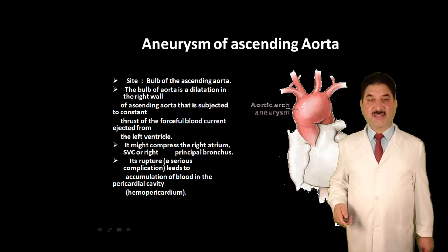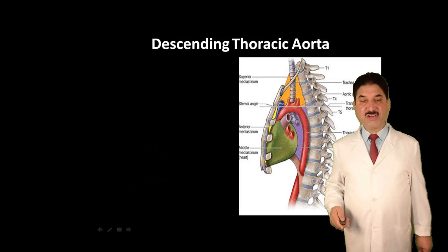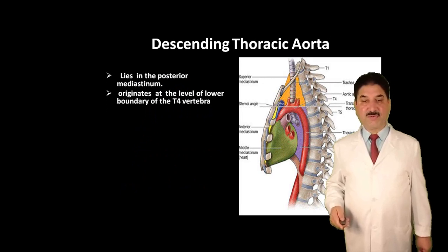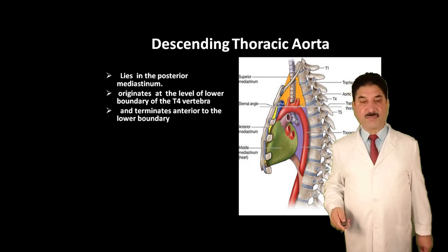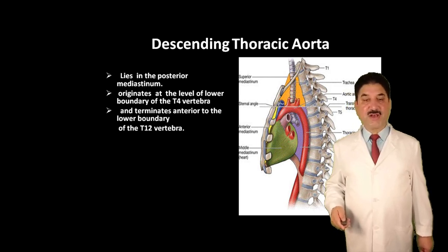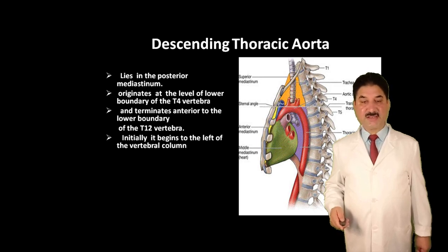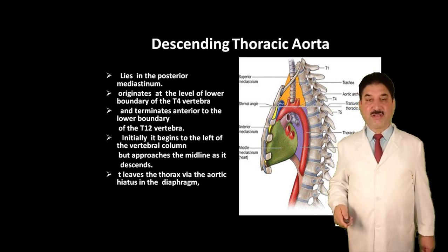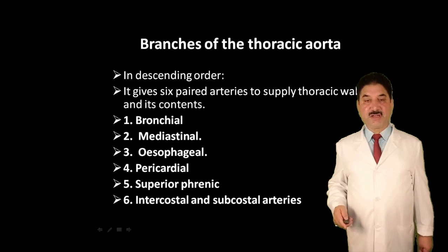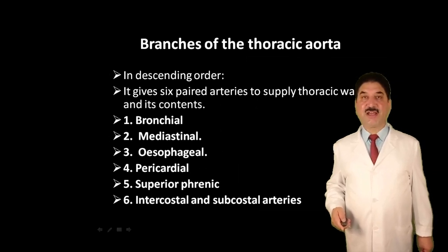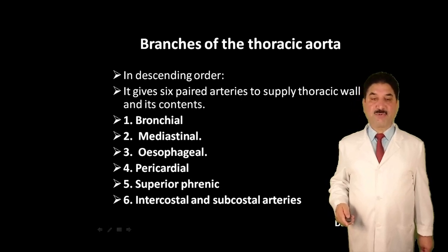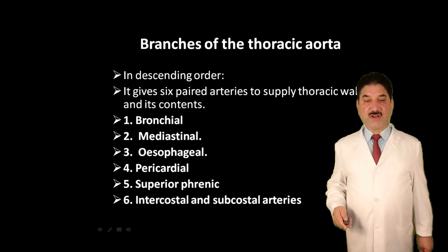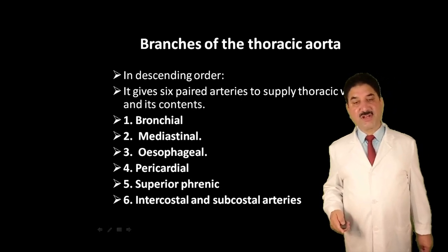Descending thoracic aorta lies in the posterior mediastinum. It originates at the level of the lower boundary of T4 vertebra and terminates anterior to the lower boundary of T12 vertebra. Initially it lies to the left of the vertebral column but approaches the midline as it descends. It leaves the thorax via the aortic hiatus in the diaphragm to become the abdominal aorta. Branches include: bronchial, mediastinal, esophageal, pericardial, superior phrenic, posterior intercostal, and subcostal arteries.